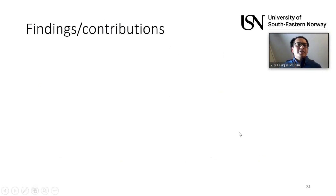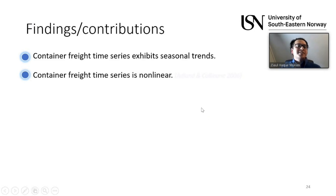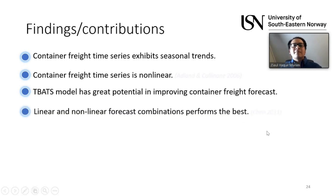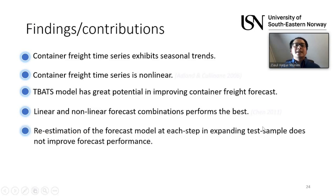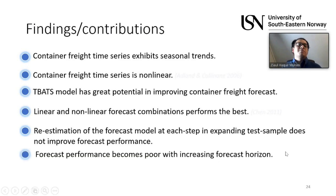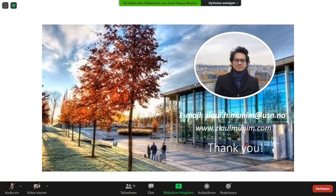To sum up, the key contributions are: we confirm seasonality in the container freight rate time series; we confirm the time series is nonlinear; the TBATS model has great potential in improving forecast performance; and combining linear and nonlinear models improves forecast performance. However, re-estimation does not really improve forecast performance — so we shouldn't spend extra computation time on it if it doesn't help. Forecast performance also deteriorates with increasing forecast horizon. Thank you for listening — if you have any questions, we can take one or two now.